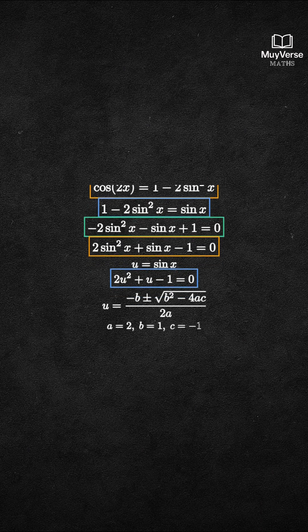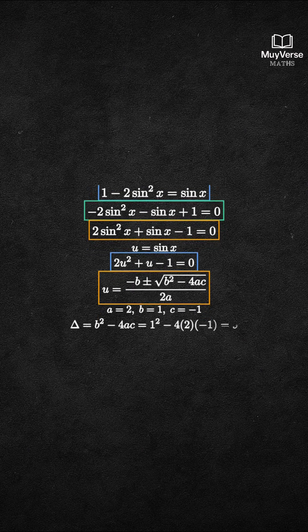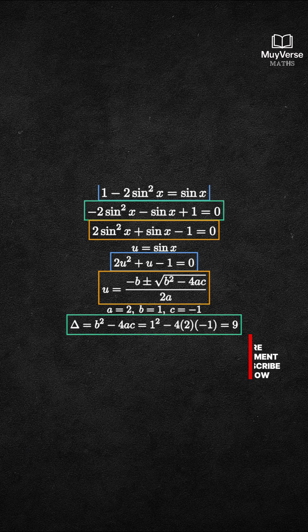u equals negative b plus or minus the square root of b squared minus 4ac all over 2a. Here a equals 2, b equals 1, c equals negative 1. Compute the discriminant: 1 squared minus 4 times 2 times negative 1 equals 9.